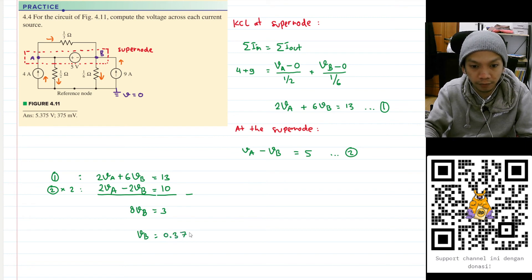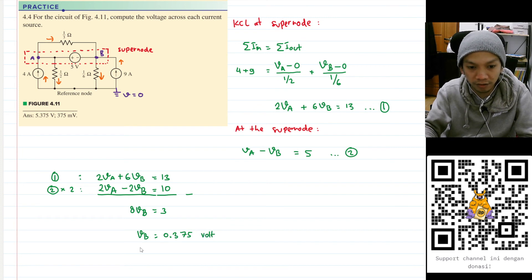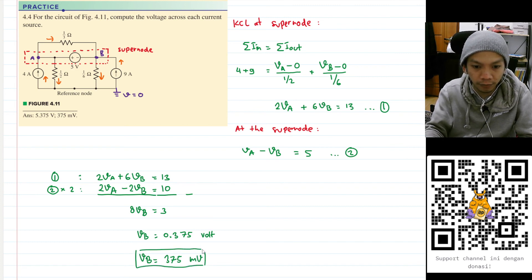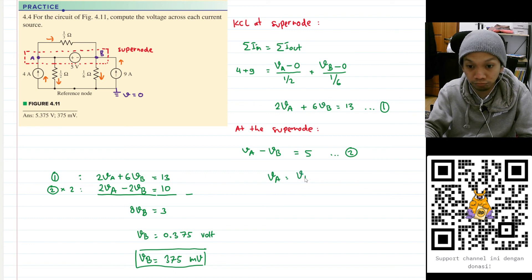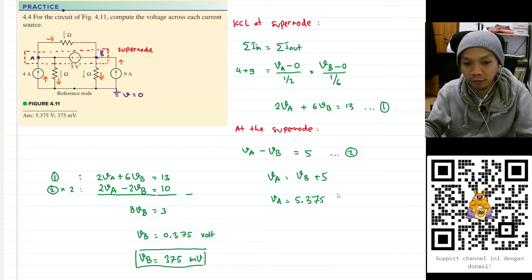Okay, this is for VB, but we still need to find VA, right? But VA is just VB plus five. Yeah, so our VB is this one, so I will have VA will be 5.375 volt.